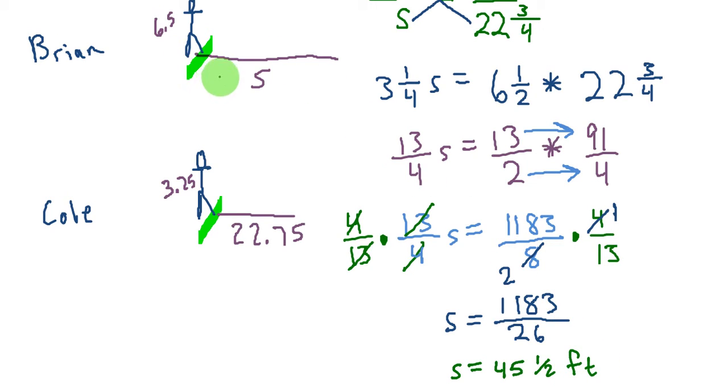So we can see that Brian's shadow S has to be a length of 45 and 1 half feet. That makes a lot of sense because 45 and 1 half is double 22 and 3 fourths.